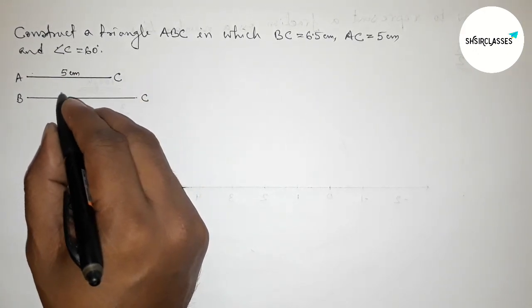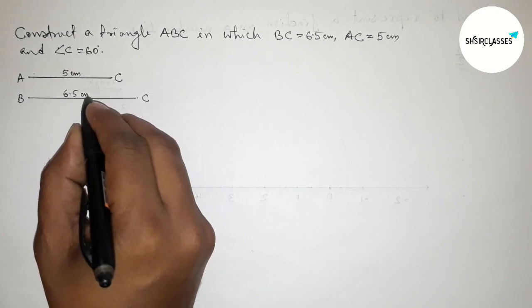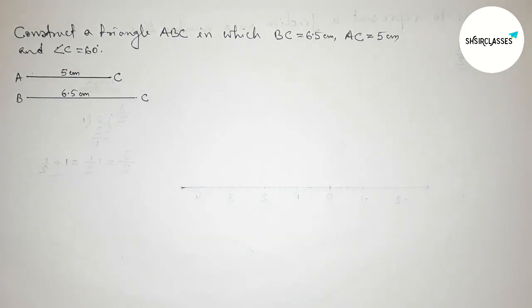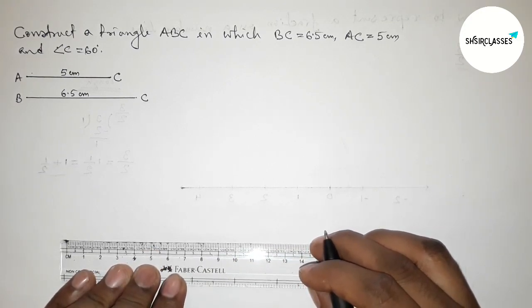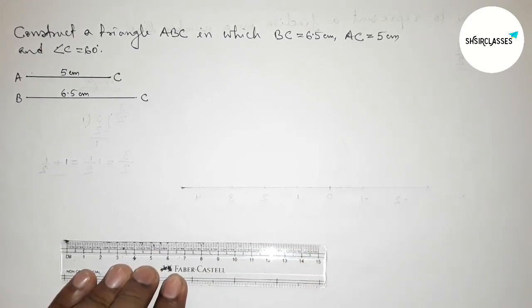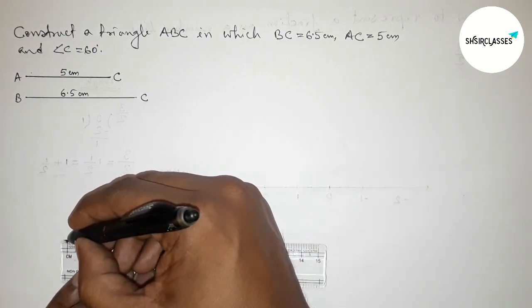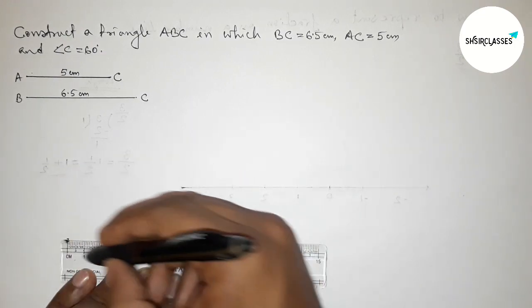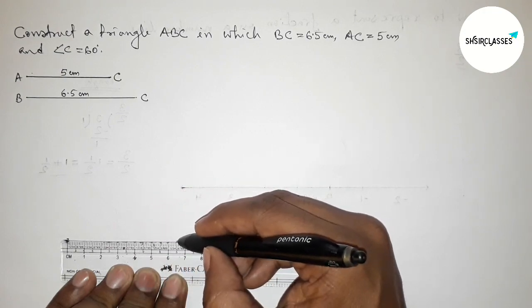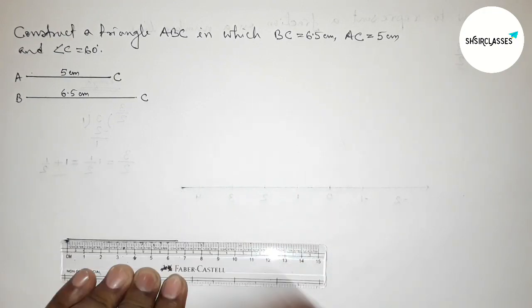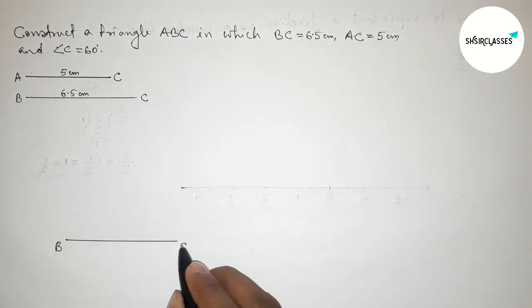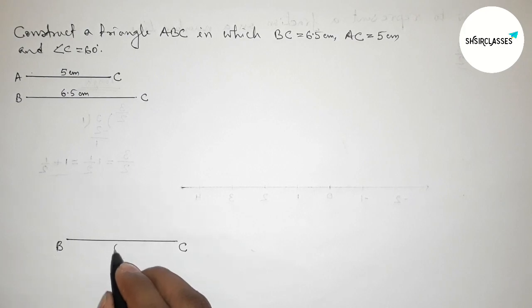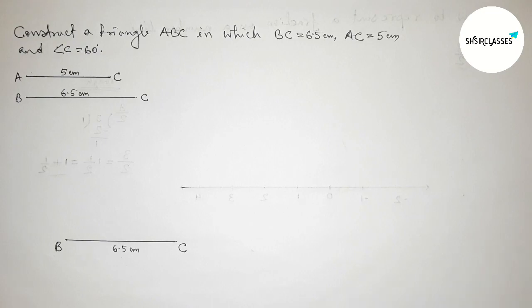Now we have to draw the side BC equals 6.5 centimeter. Starting from 0 — 1, 2, 3, 4, 5, 6 — and this is the 6.5 centimeter line. Taking here point B and here point C, so BC equals 6.5 centimeter.